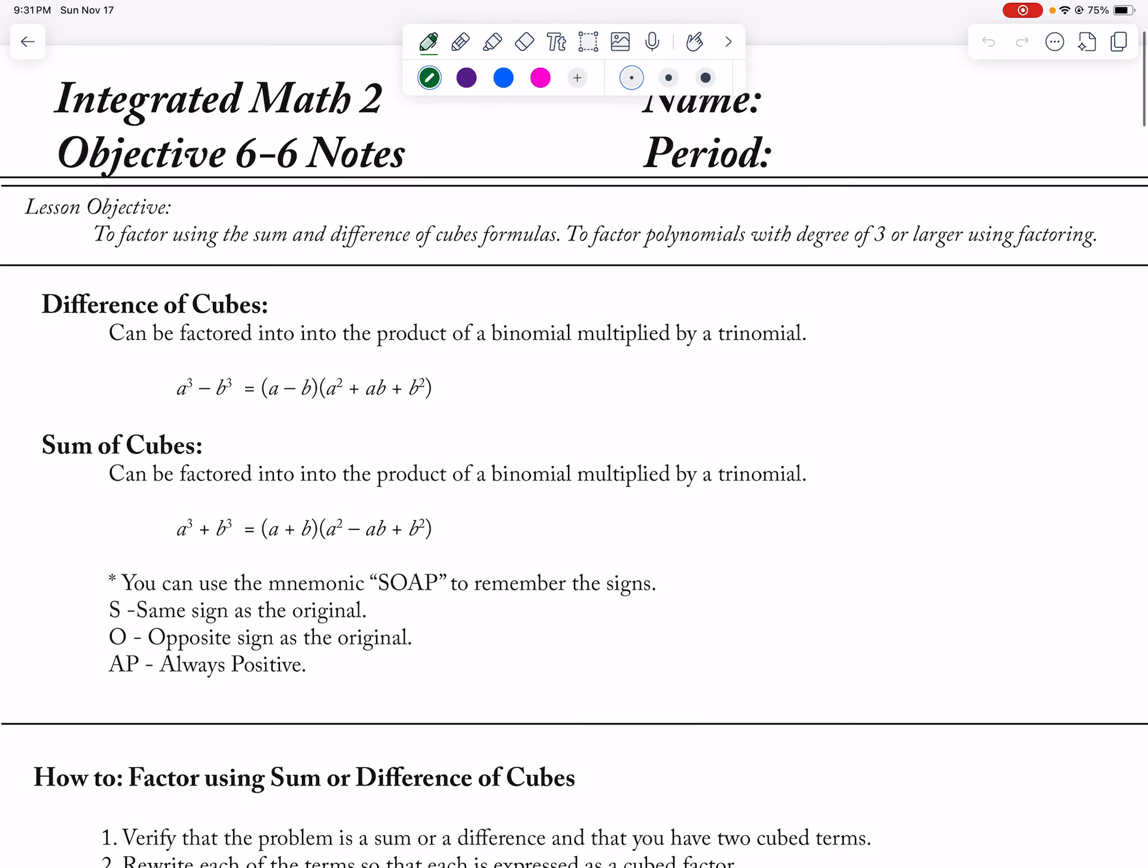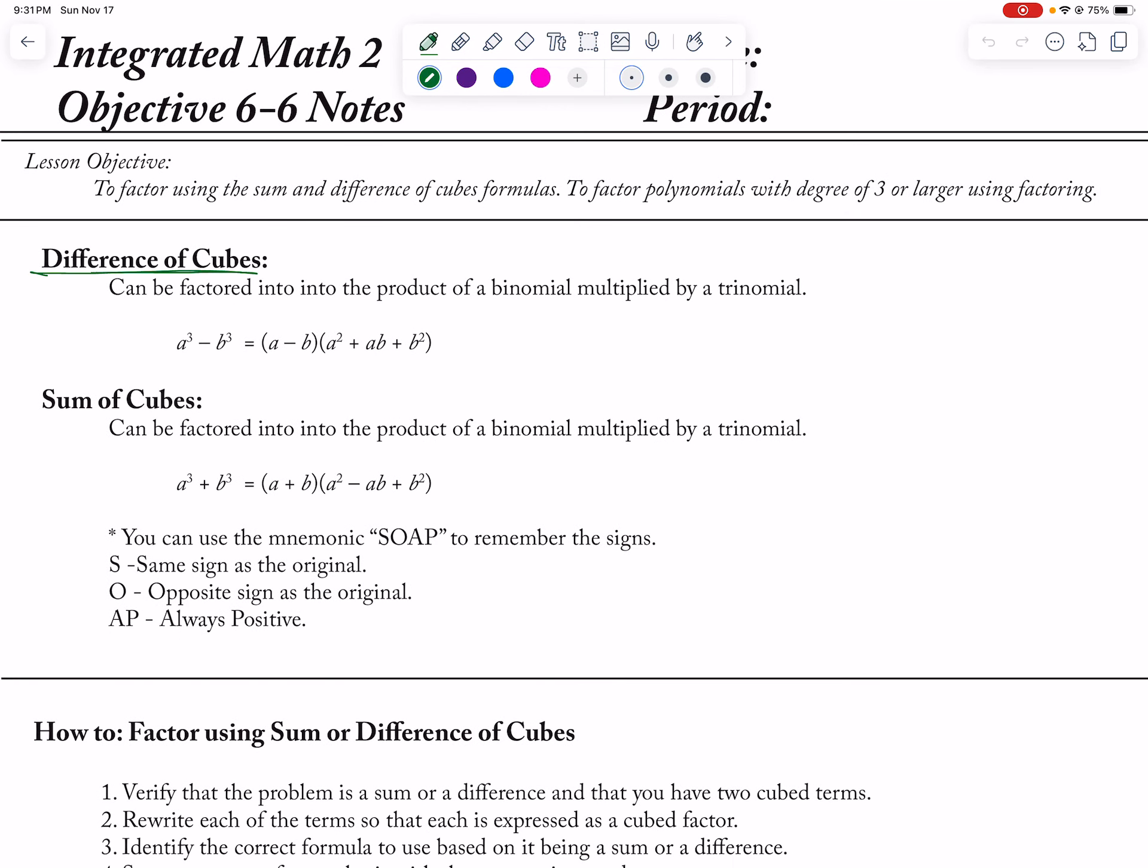All right, so we have formulas now for when we factor a difference of cubes or the sum of cubes. If I'm missing a bunch of middle terms and I have something that's cubed minus something that's cubed, it factors to this formula that you have to memorize. Same thing here. An a³ plus a b³ factors this way. The key is to figure out what A is equal to and what B is equal to and then just plug them into this formula, depending on whether you have a sum of cubes or a difference of cubes.